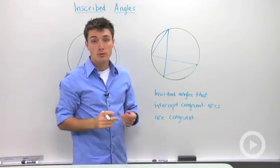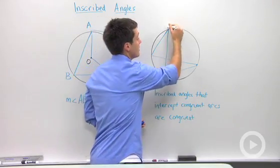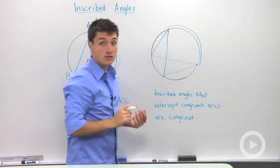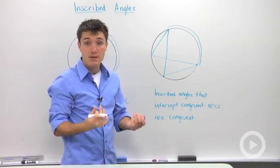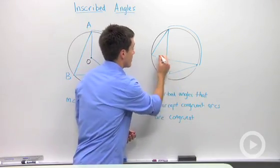now we've created two inscribed angles that have the same intercepted arc. If they have the same intercepted arc, then they must be congruent.